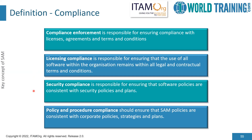Policy and Procedure Compliance is about being consistent with the corporate policies, meaning the SAM work should be in line with corporate policies, strategies, and plans. This includes communicating to employees the consequences of non-compliance — for example, intentional misuse of software could result in loss of job. There should also be cost-justifiable preventive mechanisms, such as preventing unauthorized downloads of software from the internet and prohibiting attachment of certain file types to emails.